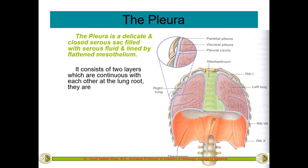The pleura is made up of two layers. It is actually a sac-like structure. During development, the small buds of the lung invaginate into it, become much larger, and are pushed to the side. This reduces the cavity into a very thin and small potential space. Because it is a closed cavity, the two layers are continuous with each other at the roots of the lung.